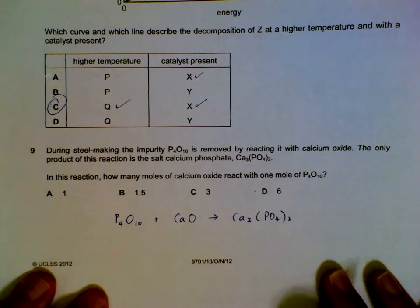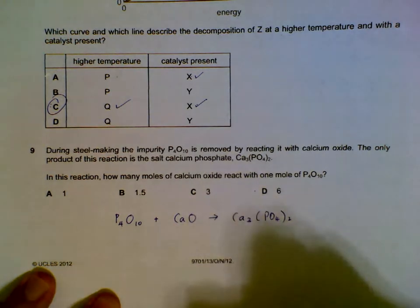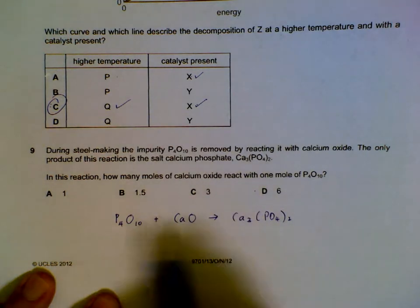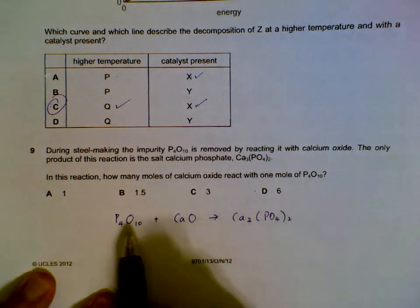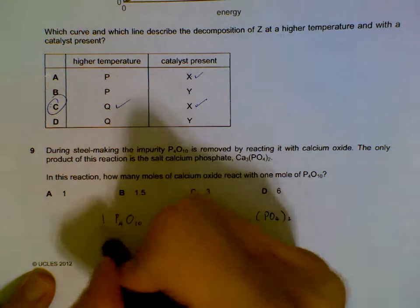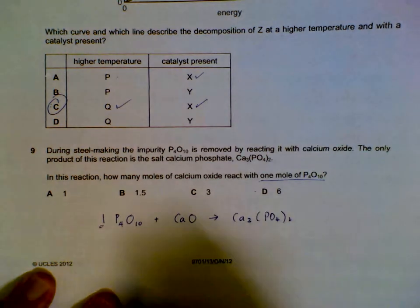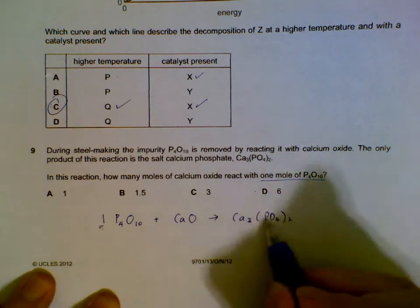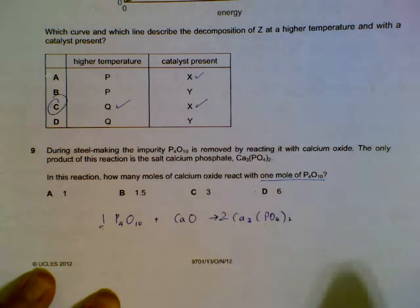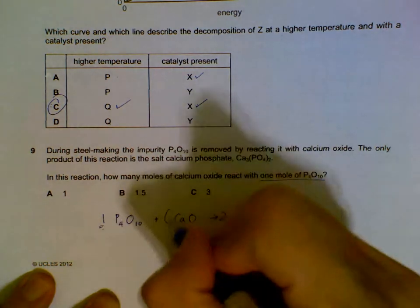Reacting P4O10 with calcium oxide. The only product is calcium phosphate. So we try to form an equation and then we balance. Our phosphorus: we have to set this as one because they want how many moles react with one mole of P4O10. So we fix this as one. We try to balance the P here, the phosphorus. We have to have a total of four. We multiply by two. And then we balance the calcium: six here, there will have to be six on this side.